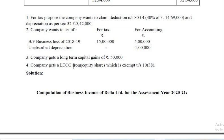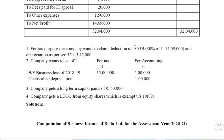Now look at the next point: the company gets long-term capital gain from equity shares — 30,000 — which is exempt under Section 10(38). This value should necessarily be added to net profit while computing book profit, even though it is not already on the credit side of the profit and loss account. So 30,000 must be added. Whereas the previous one — 50,000 which is not already included — is not to be included in book profit.